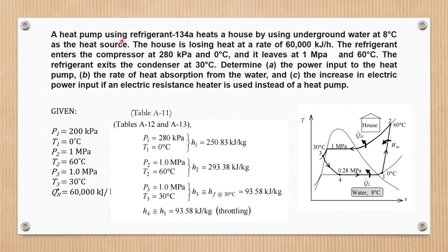A heat pump using refrigerant 134A heats a house by using underground water at 8 degrees Celsius as the heat source. The house is losing heat at a rate of 60,000 kilojoules per hour. The refrigerant enters the compressor at 280 kilopascal and 0 degrees Celsius, and it leaves at 1 megapascal and 60 degrees Celsius.